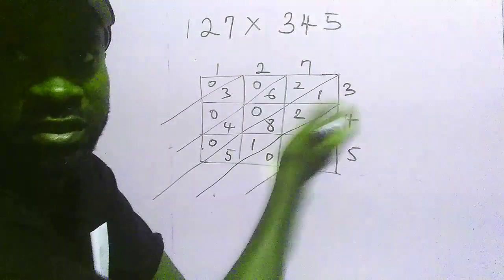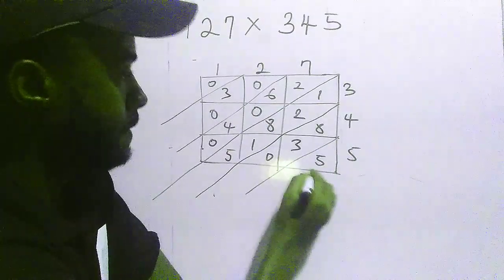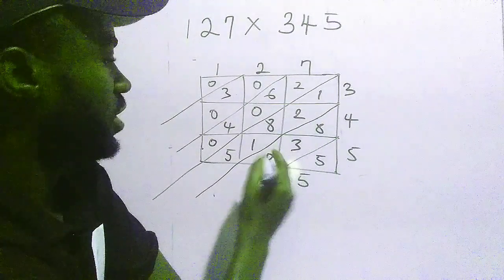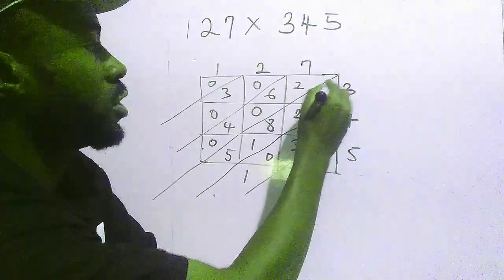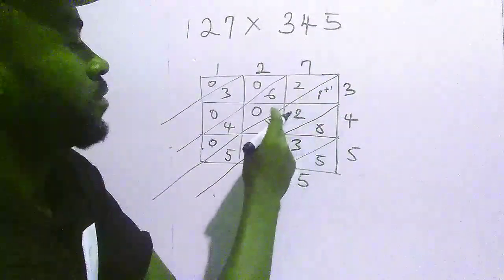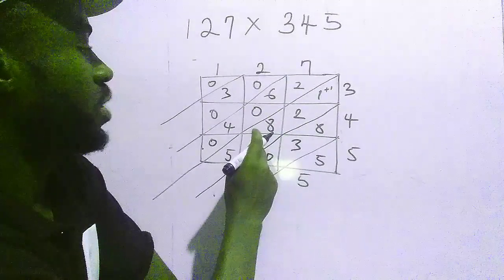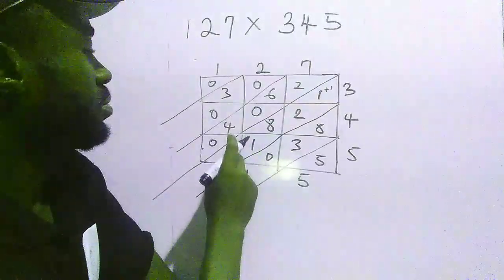Now add diagonally. I have 5 here. Eight plus three is 11, write 1 and carry 1. Add the carried 1, that's 2. Two plus two is 4. Four plus eight is 12, plus one is 13, plus five is 18.